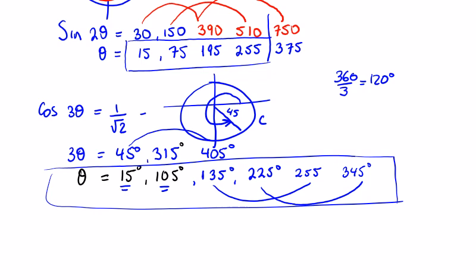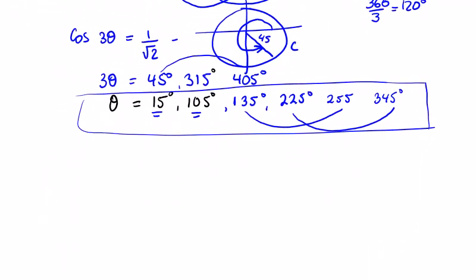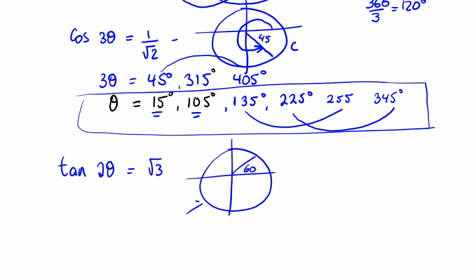So when it's 3 theta, you're going to add on 120. When it was 2 theta in the previous video, you can see that we added 180 on between these two and between these two, so you can do it that way as well. Let's do it that way for the last one, which is tan of 2 theta is equal to root 3. The tan of 2 theta is equal to root 3, and you're all saying, well, the tan of 60 is equal to root 3, and you'd be correct. So you've got 60. Where else is tan positive? In here.